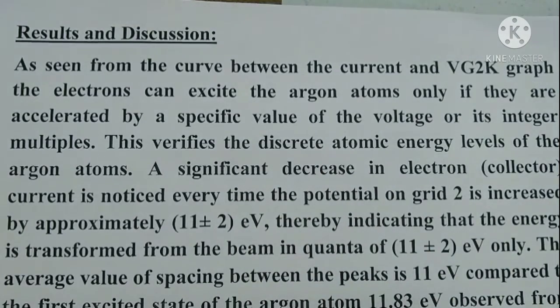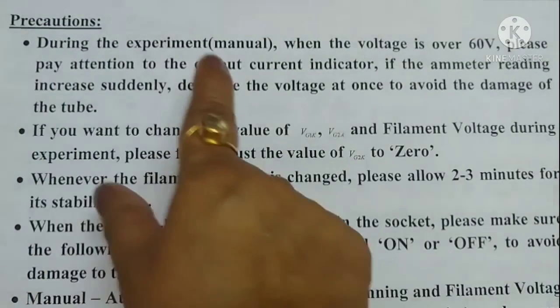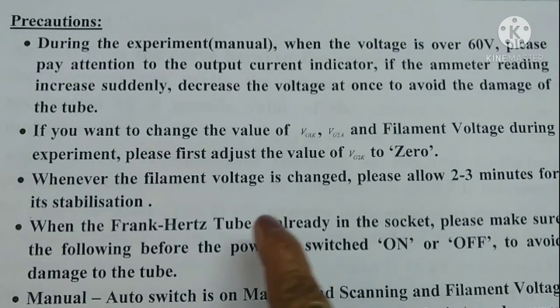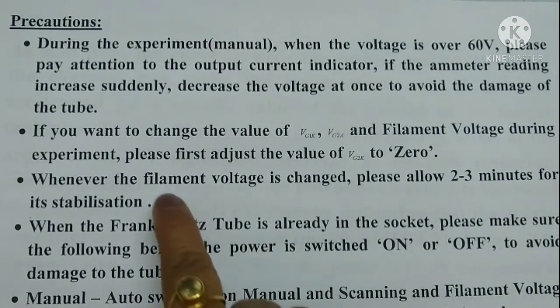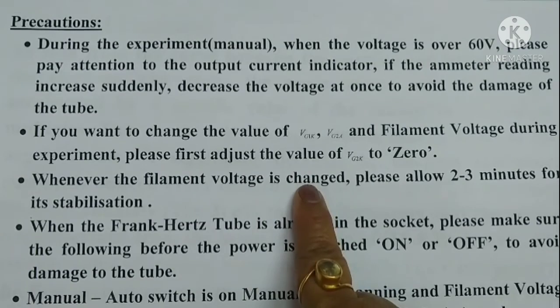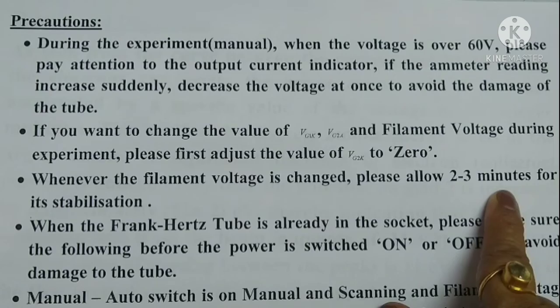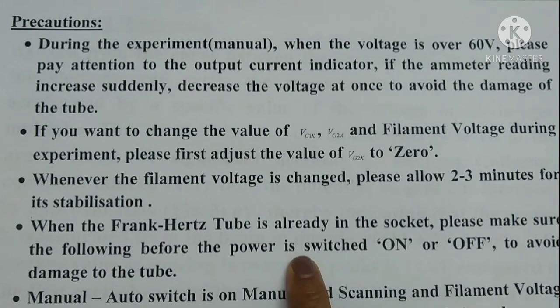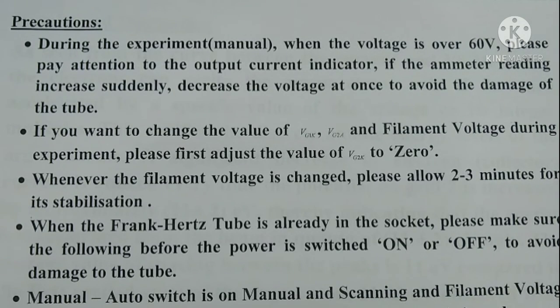Now let us discuss some precautions. During the experiment, if the current changes suddenly, we must at once decrease the voltage to avoid damage to the tube. Whenever the filament voltage is changed, we should allow at least 2-3 minutes for its stabilization. Whenever we switch on or off the device, we must ensure that all the knobs are at their minimum position. That's all about this experiment.